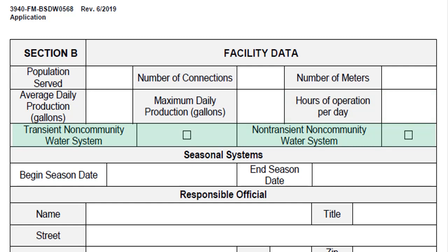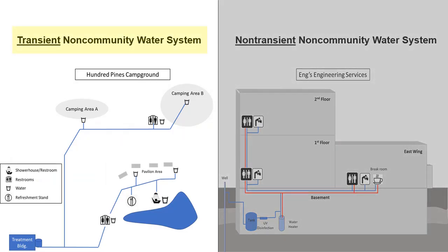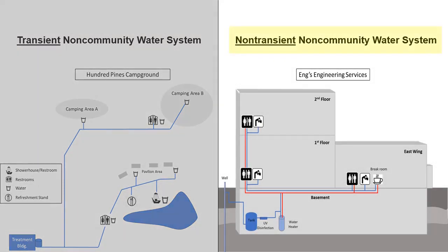The system type is either transient or non-transient. A transient system serves 25 or more people at least 60 days per year, but not necessarily the same people on a regular basis. Examples include gas stations, parks, resorts, campgrounds, restaurants, and motels. A non-transient system serves 25 or more of the same people at least six months per year. Examples include schools, factories, office buildings, and hospitals.